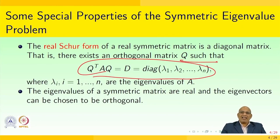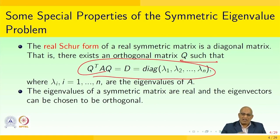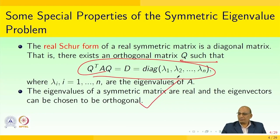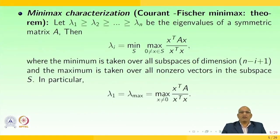The eigenvalues of a symmetric matrix are real and the eigenvectors can be chosen to be orthogonal. Then we see the minimax characterization, that is what we call the Courant-Fischer Minimax theorem. This is very important especially when matrices are being considered.